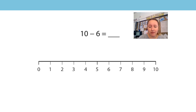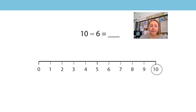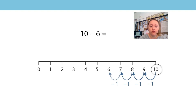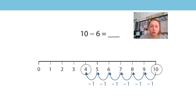Here is an equation: 10 subtract 6 is equal to a missing number. I can calculate this by starting at 10 on my number line because that's my whole, and counting back 6: 1, 2, 3, 4, 5, 6. 10 subtract 6 is equal to 4.